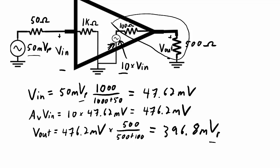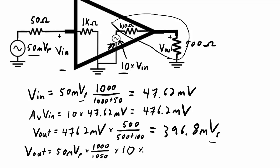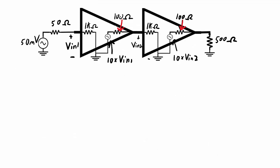That gives an output voltage of 396.8 millivolts peak, since the input was a peak voltage. Written out as one big equation: Vout equals the 50 millivolt peak source divided between the 1000 ohm and 50 ohm resistors, multiplied by the open-loop gain of 10, then multiplied by the output voltage divider 500 over 600. You can see four effects: the input signal split between input impedance and source output impedance, the internal open-circuit gain, and the voltage divider between load and output impedance. Plugging in those numbers gives the same 396.8 millivolts peak.